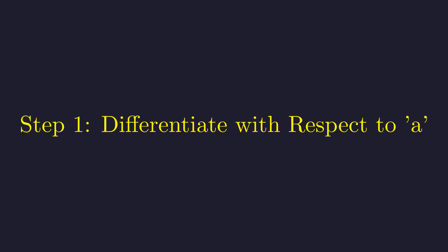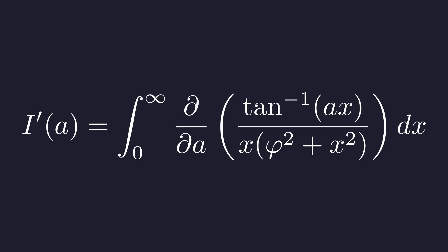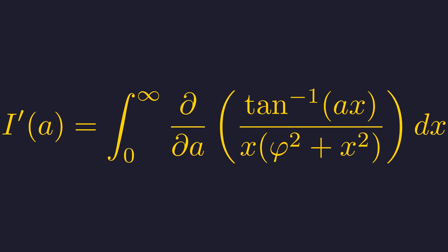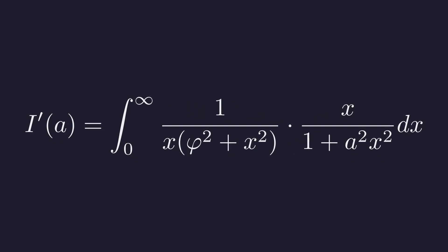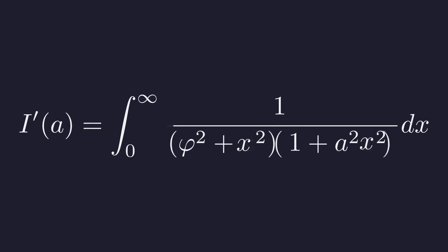Now for the magic step. We differentiate I of A with respect to A, moving the derivative inside the integral. Since the only term that depends on A is the arctangent, the derivative is straightforward. The partial derivative of arctangent of A times X with respect to A is 1 over 1 plus A squared X squared, times the derivative of the inside, which is X. The X in the numerator and denominator cancel out, leaving a much more manageable integral of a rational function.